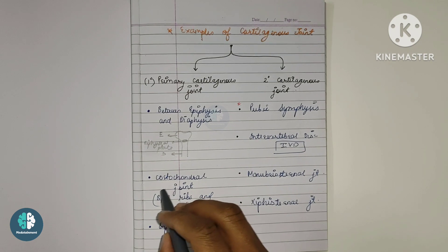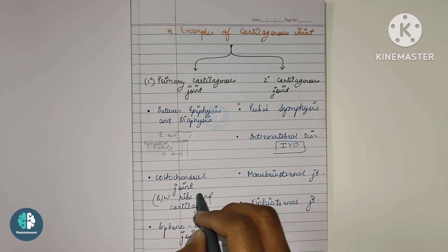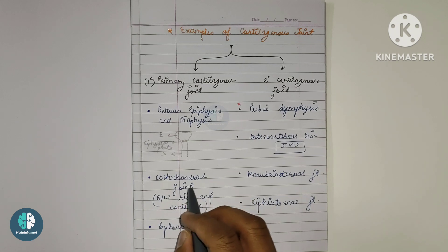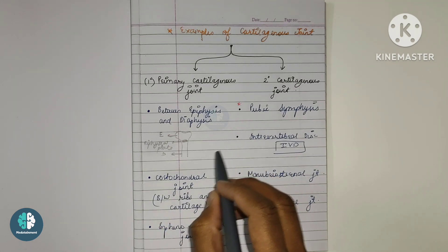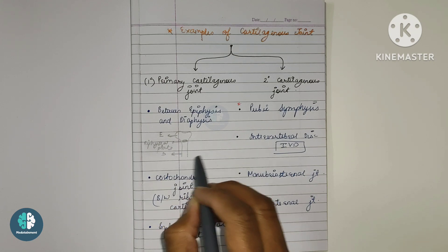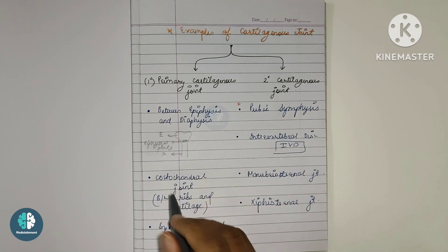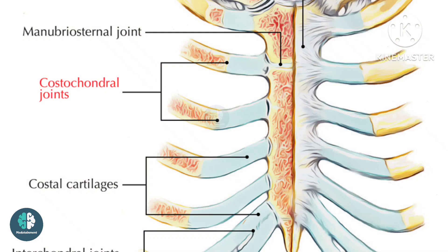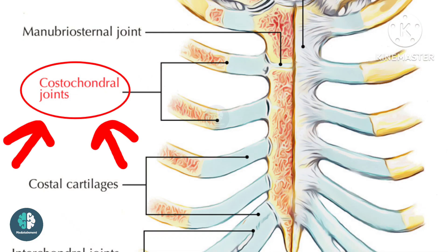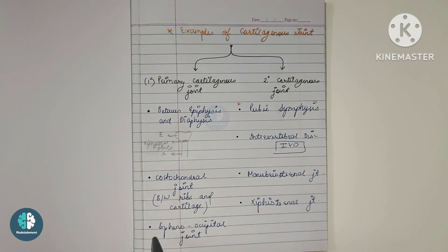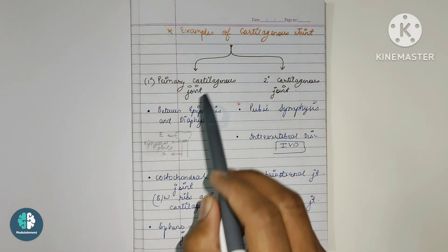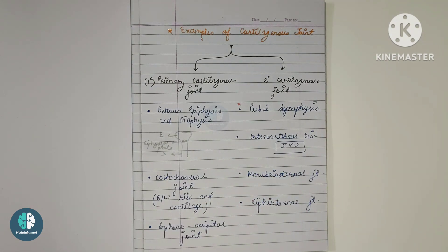The next example is the costochondral junction or costochondral joint, which is located between the ribs and the cartilage — where the ribs and cartilage meet, forming the primary cartilaginous joint. Another example is the sphenooccipital joint, which is also an example of the primary cartilaginous joint, as you can see in the picture.